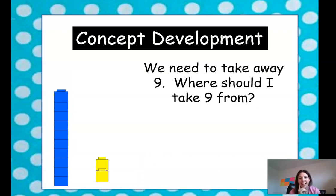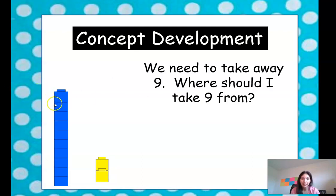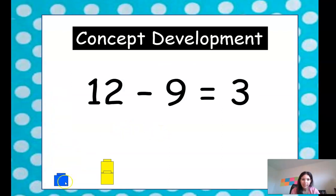Now we need to take away 9. Where should we take 9 from? Should we take it from 2? No, that wouldn't make any sense. Should we take it from this big group of 10? Yes, we should take it from the group of 10. So when you take 9 from this group of 10, there's 1 left. And then you still have this group of 2 that was here before. So 12 minus 9 equals 3.